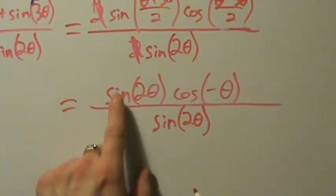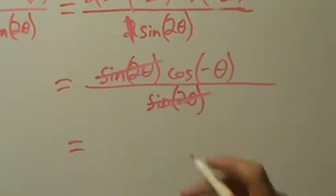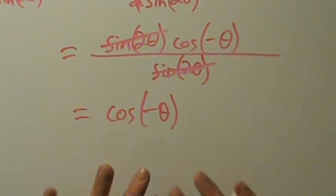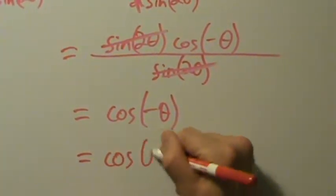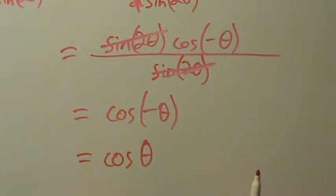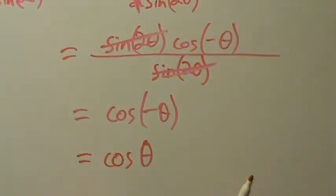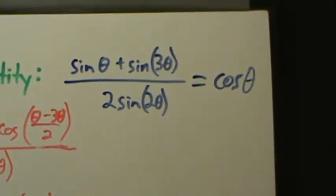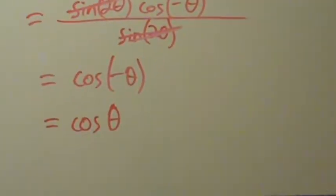On the top we have sine of two theta, and on the bottom we have sine of two theta, so they cancel — that's wonderful. We're left with cosine of negative theta. Remember, cosine is an even function, which means cosine of negative theta equals cosine of theta. So we've shown this expression equals cosine of theta, which is exactly what we wanted to establish.